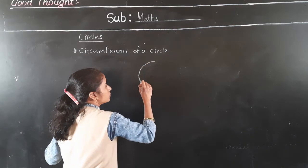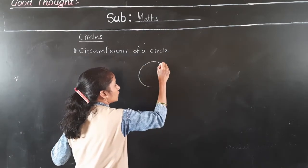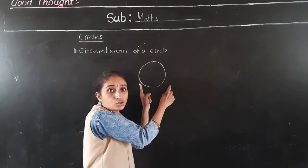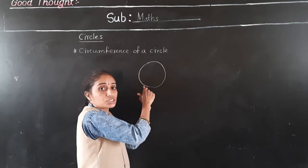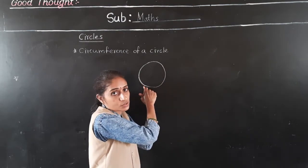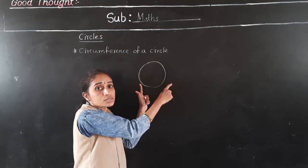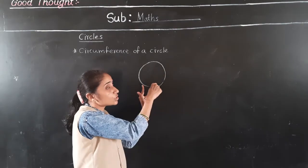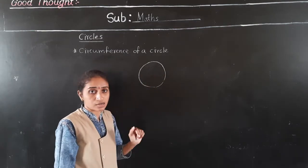This is the circle, and the distance around the circular region is known as its circumference. Understand what circumference means: it is the distance around the circular region.